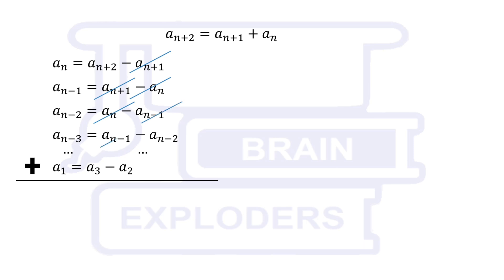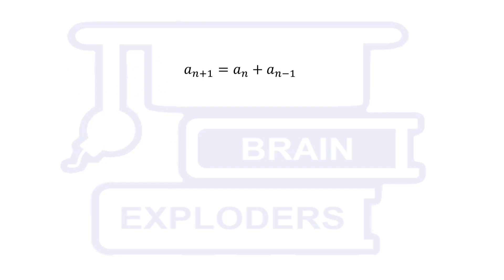On addition, most of the terms are cancelled and we find that sum of first n Fibonacci numbers is equal to n plus 2th Fibonacci number minus 1. We will apply the same concept in the given problem.